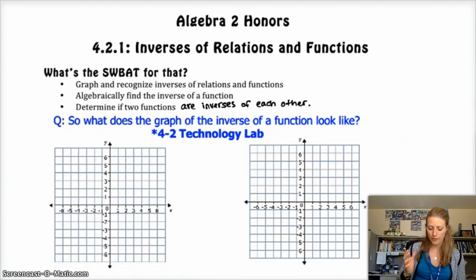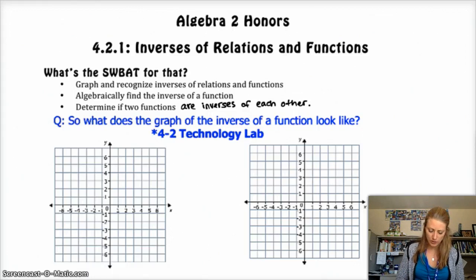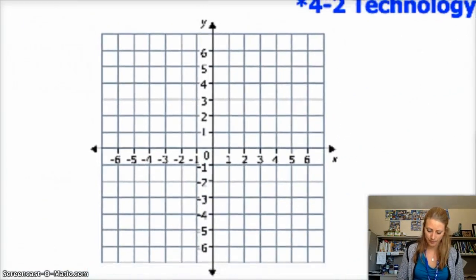The line y equals x is a straight diagonal line. It goes through 1-1, 2-2, 3-3, 4-4, 5-5, negative 1, negative 1. That's the line y equals x.